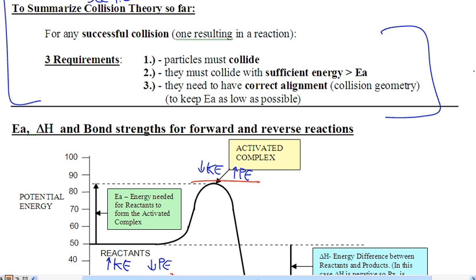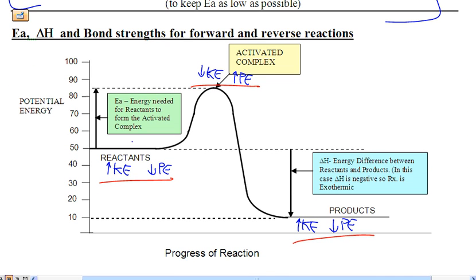To summarize, collision theory is based on three things: one, molecules have to collide to react; two, they have to collide with sufficient energy greater than the EA; and three, they have to collide with the correct alignment. For the potential energy curve: reactants start with high kinetic energy and low potential energy. As they approach, kinetic energy goes down and potential energy goes up. When they collide successfully, they make the activated complex — at that point kinetic energy is essentially zero and potential energy is at 100%. Then they form products, and due to repulsive forces they push apart, returning to high KE and low PE.